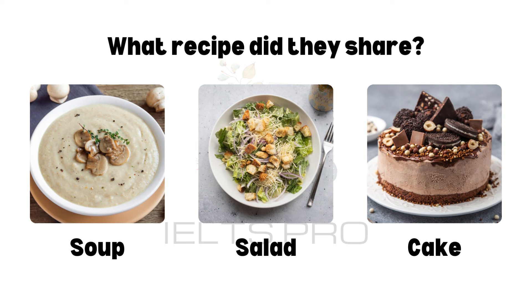First, you fry the onions and mushrooms in butter. Then, you add flour and make a roux. After that, you add chicken broth and milk. Finally, you season it with salt. I use cream cheese as a special ingredient to enhance the flavor.